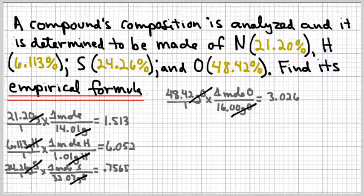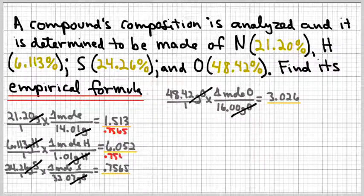So at least I've got moles. But I don't have very pretty numbers. And when you want to generate nicer numbers, whole numbers, you're going to try to do that by dividing by the smallest of these four values. And I look at the four and obviously 0.7565 is the number I'm going to want to divide by.